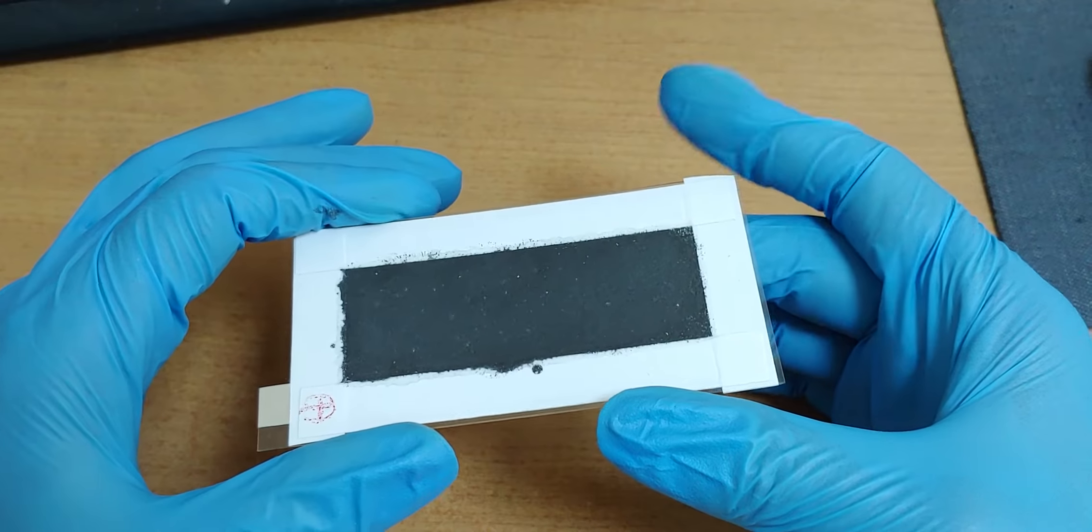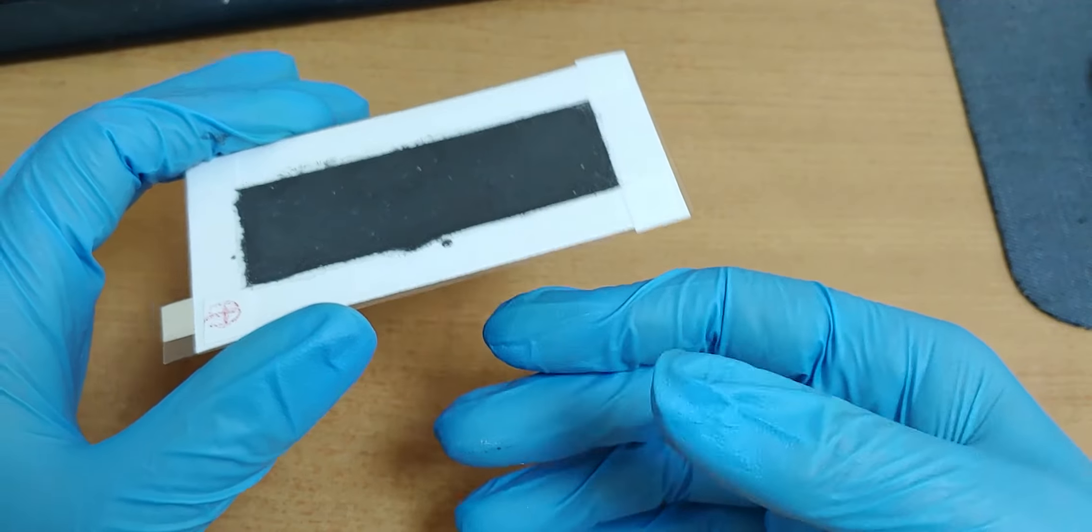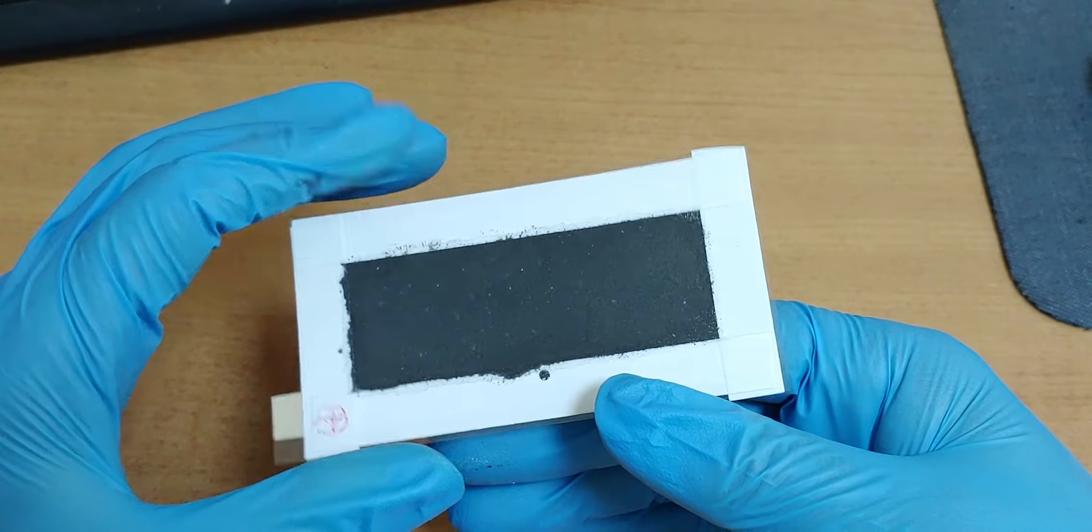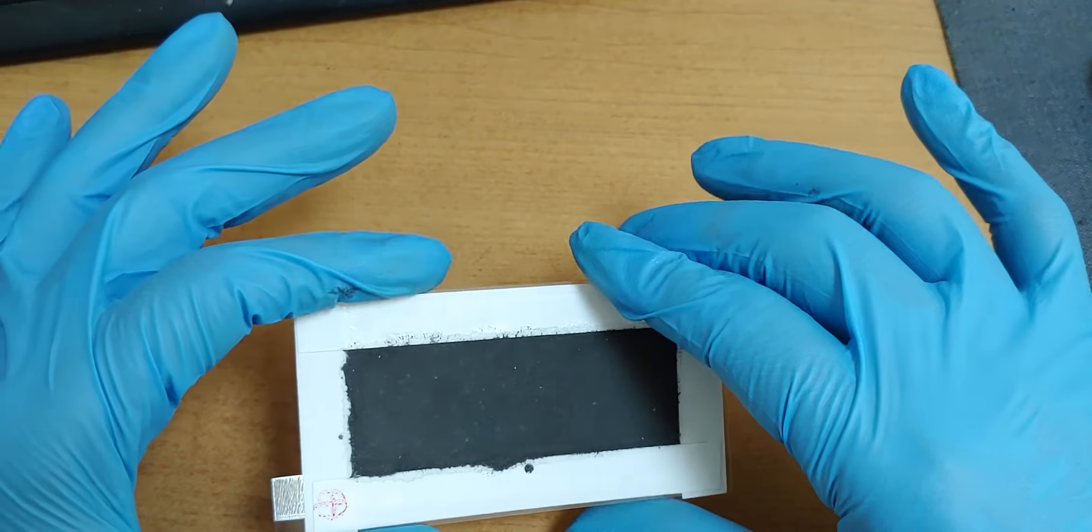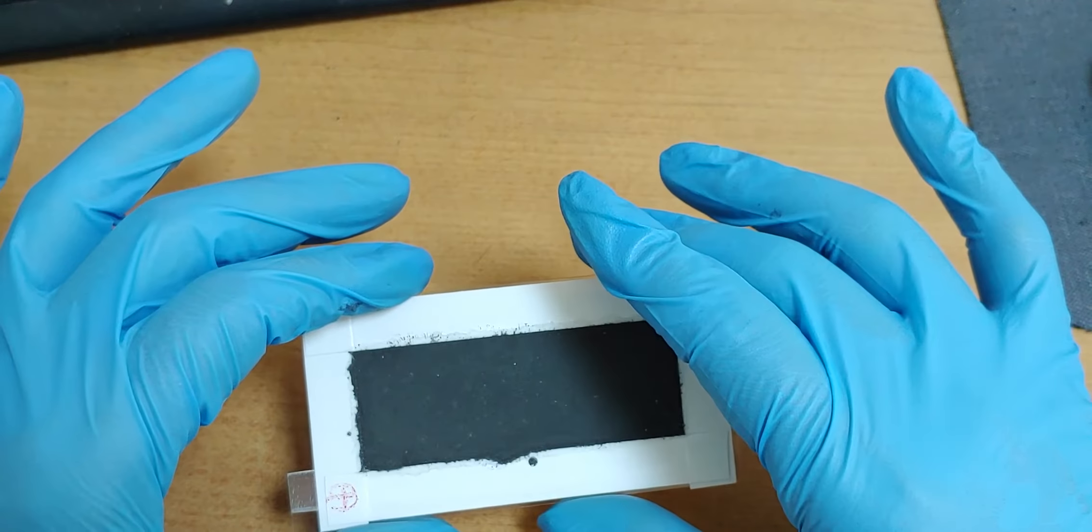Many people ask me about how to make graphene electrode on aluminum. This time I used the other method.